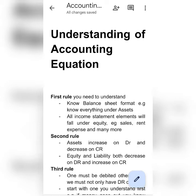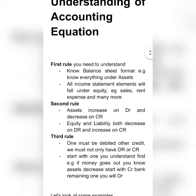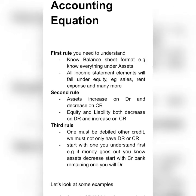The first rule you need to know in order to understand the accounting equation is the balance sheet in and out. You need to know what falls under assets in a balance sheet. Under a balance sheet, we firstly have assets, and under assets we have non-current assets. For example, under non-current assets we have PPE items like equipment, vehicle, land and building, and so on. You need to understand and know the balance sheet format in order to pick up the correct answer when we go to accounting equation, because they go hand in hand.